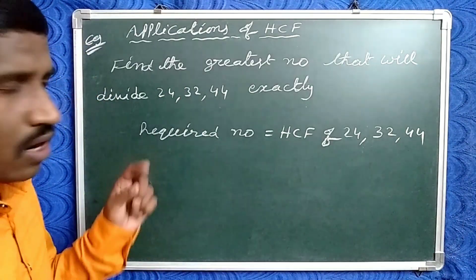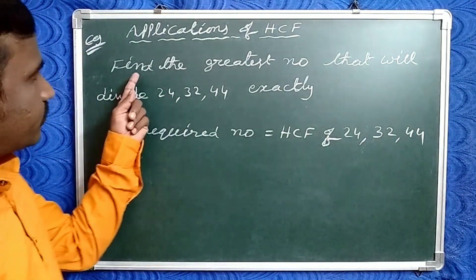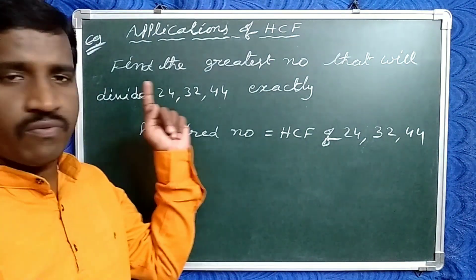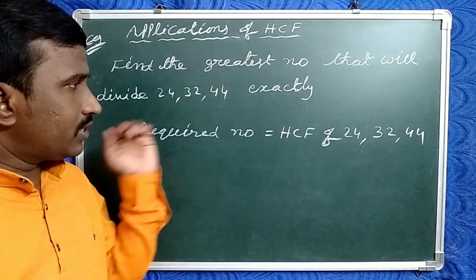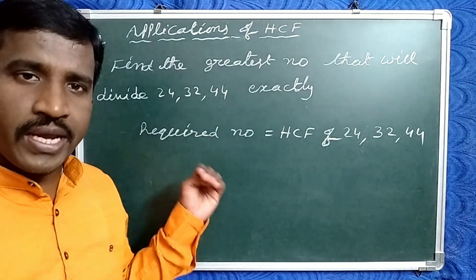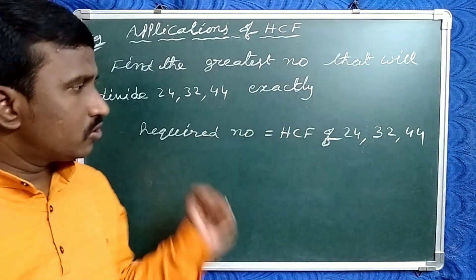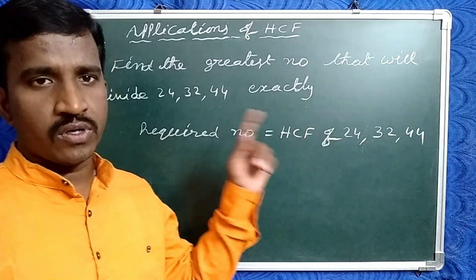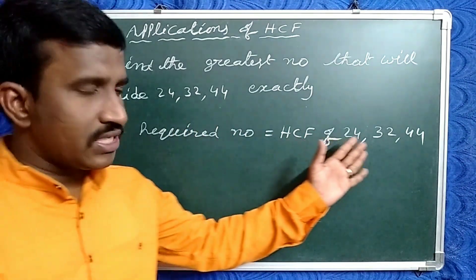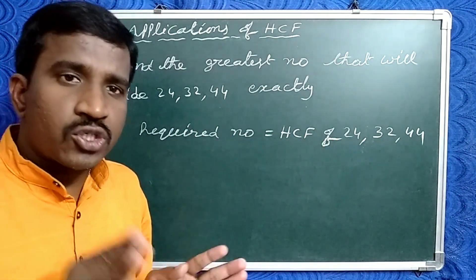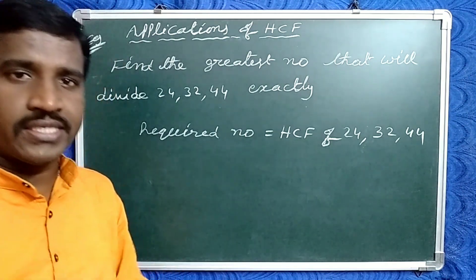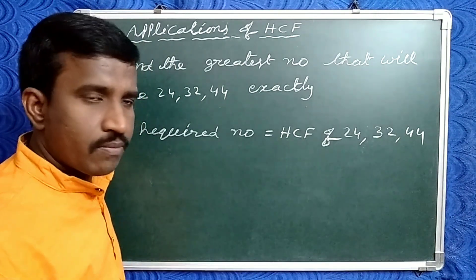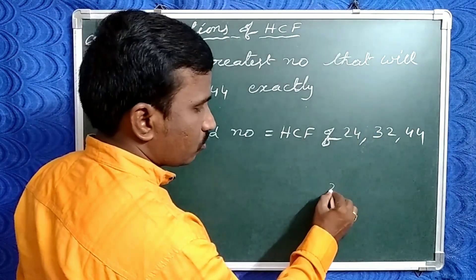Friends, now check the example of the first model. In this case, find the greatest number that will divide 24, 32, and 44 exactly. So in this case, the required answer will be HCF of the given numbers. Now, what are the given numbers here? 24, 32, 44. Now find the HCF of these 3 numbers. In the shortcut method, take the smallest number. Here, what is the smallest number? 24.